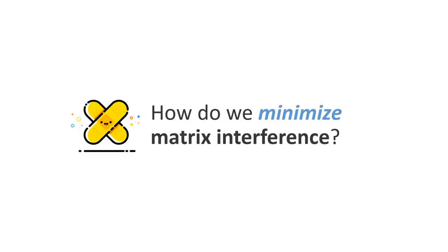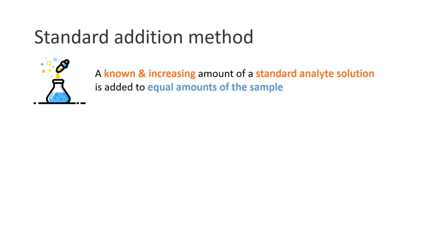Hey guys, Francis here, welcome back. So how do we minimize the matrix interference? The answer is we can use the standard addition method, which a known and increasing amount of a standard analyte solution is added to equal amounts of the sample.